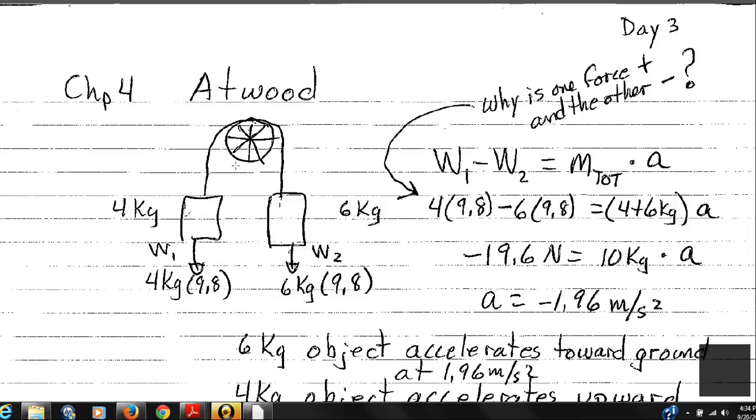So Atwood's machine, we use a pulley to redirect the tension force, and we'll see how that operates. So to calculate the acceleration, we start by considering both masses as our system. So we're including both masses.